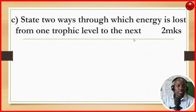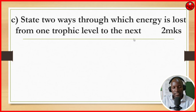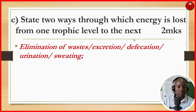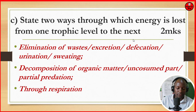Question 7C: state two ways through which energy is lost from one trophic level to the next. As we move from producers down the trophic levels to decomposers, energy is lost. Number 1 is through elimination of waste: excretion, defecation, urination, and sweating. Number 2 is through decomposition of organic matter, unconsumed parts, and also partial predation. Energy is also lost through respiration.